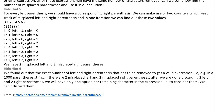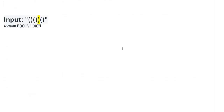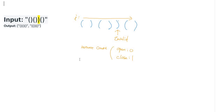Let's look at the example more closely. First we find invalid parentheses through the first iteration using an opening and close parenthesis counter. In this example we find one invalid close parenthesis. We call this the remove count — open remove count is zero and close remove count is one. We can find this during the first iteration. The next step is to find all possible combinations of valid parentheses by removing that one invalid close parenthesis, using a recursive function in a brute force way.